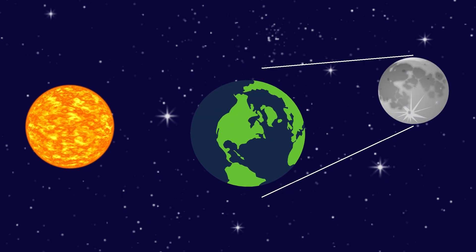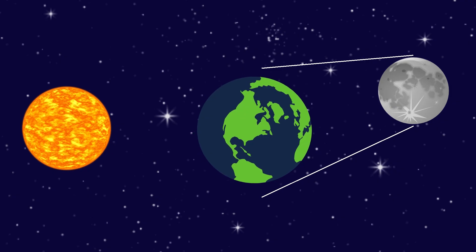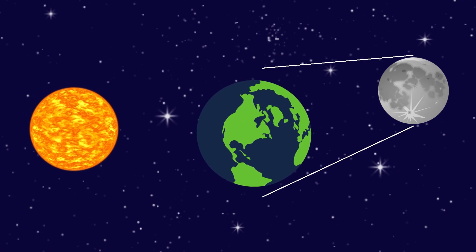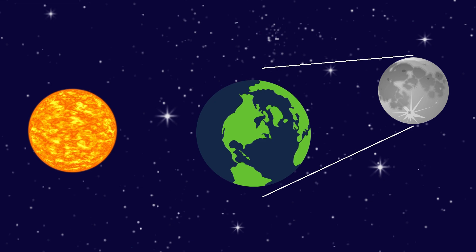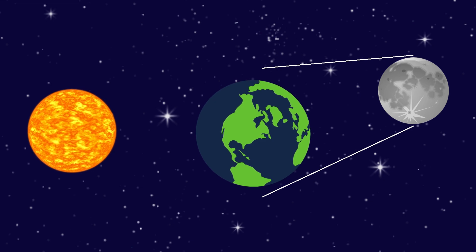But Earth keeps spinning. And when your part of the Earth turns away from the sun, it becomes nighttime. The sun goes down and the sky gets dark.